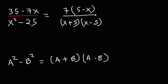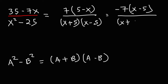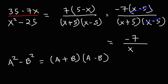Now, is there anything that we can cancel? It doesn't appear to be so, but notice what happens if we factor out a negative 1 from 5 minus x. If we take out a negative, the negative x becomes positive x, and the positive 5 becomes negative 5. So now at this point, we can cancel x minus 5. Doing so will give us our simplified answer, which is negative 7 over x plus 5. So that's how we could simplify this particular rational expression.